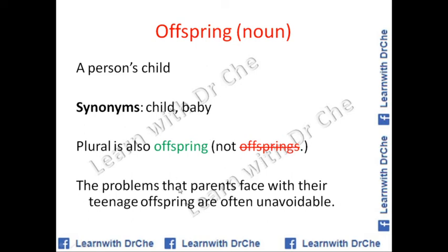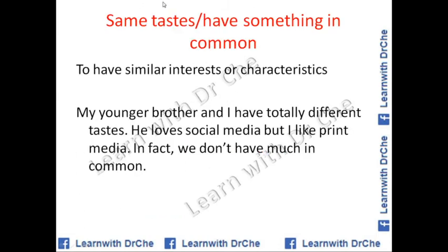'The problems that parents face with their teenage offspring are often unavoidable' — this is C1 or C2 level language. To 'have something in common' or 'have the same tastes' means to be similar in interests or characteristics. For example: 'My younger brother and I have totally different tastes — he loves social media but I like print media.'